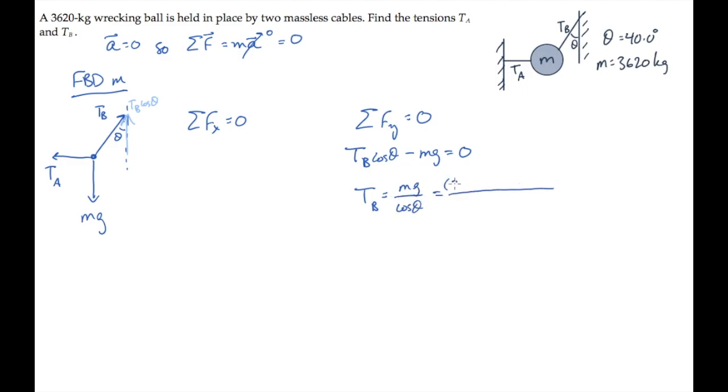And then substitute the known values, finding that the tension equals 4.63 times 10 to the fourth Newtons, or 46.3 kilonewtons.